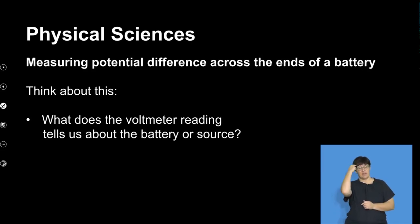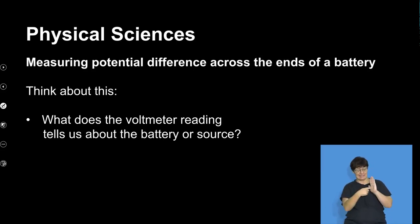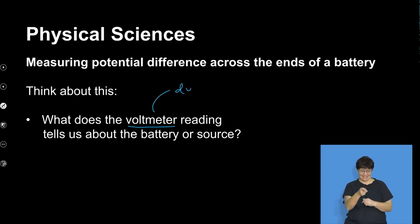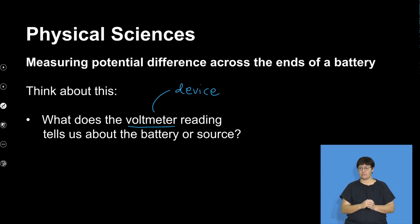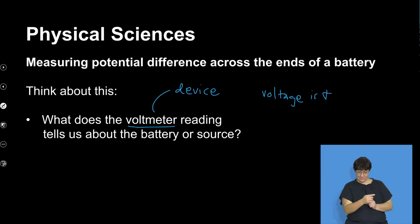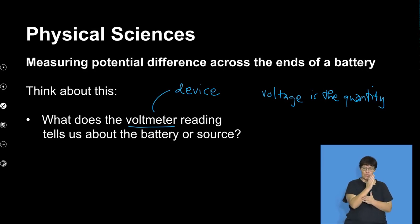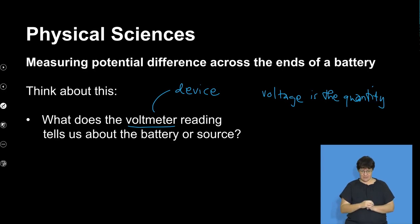Think about this: what does the voltmeter reading tell us about the battery or a source? A voltmeter is an instrument — a device that we use. There's a difference between voltmeter and voltage. Voltage is actually the quantity that can be measured, and the device used to measure this quantity is called a voltmeter. So the question is, what does the voltmeter reading tell us about the battery or the source?